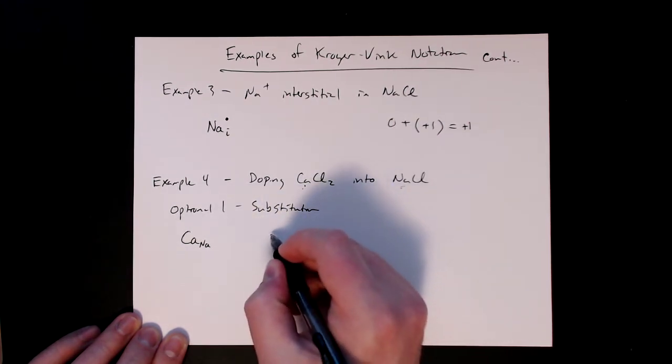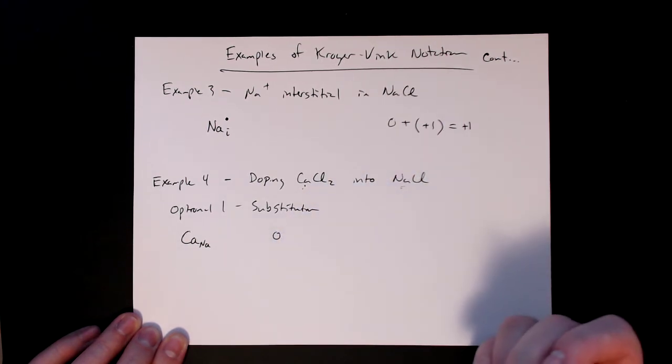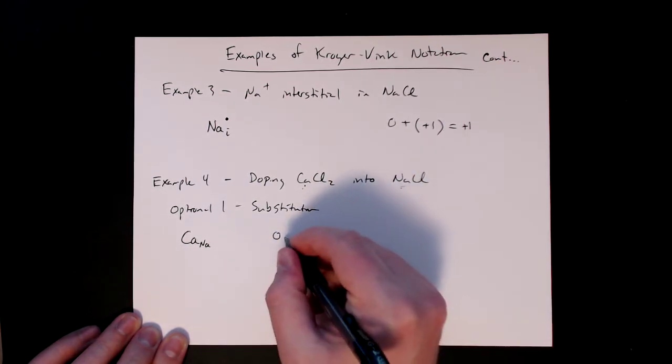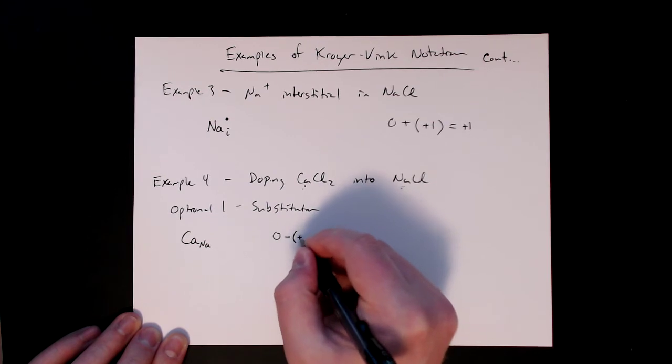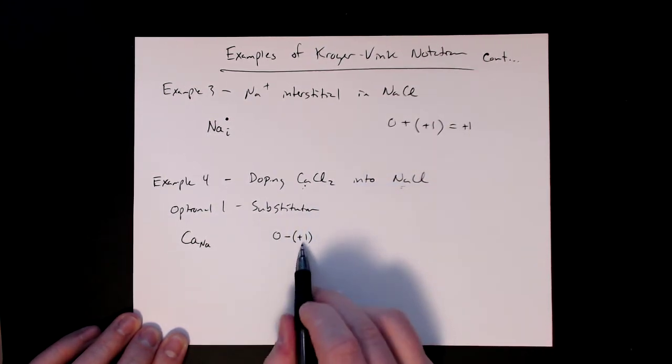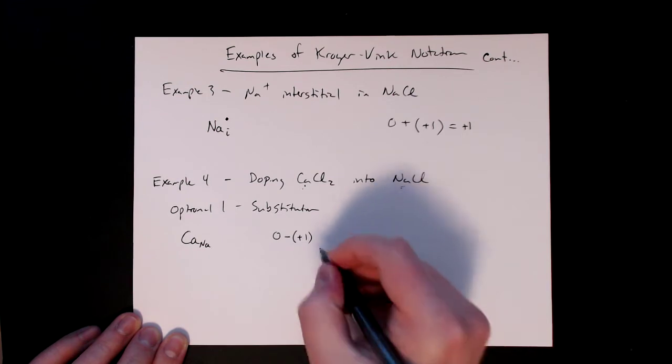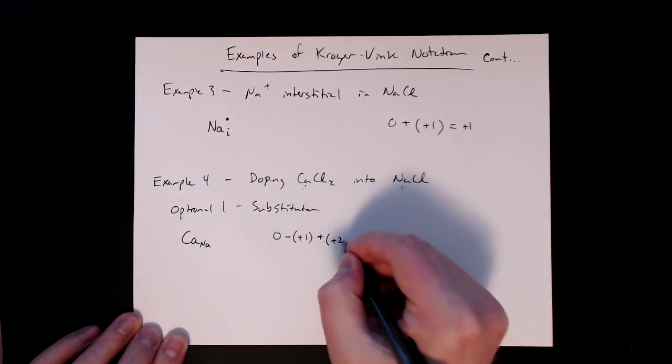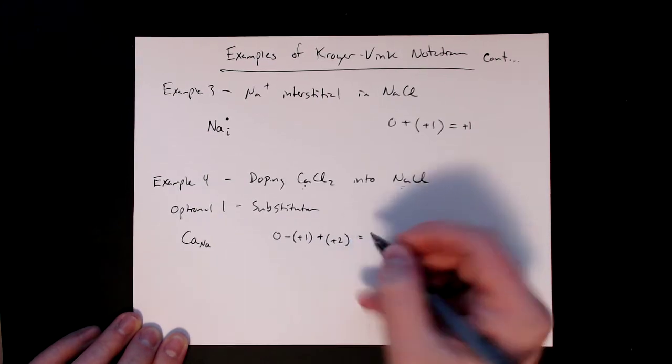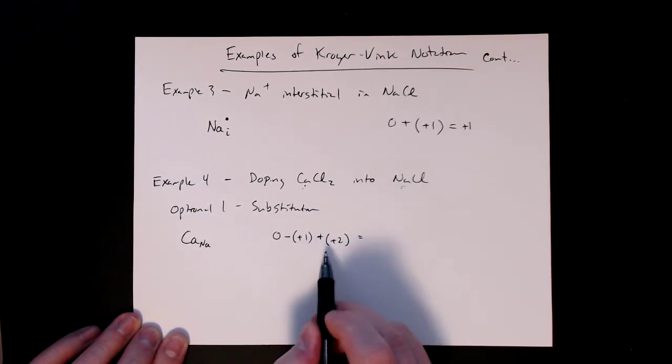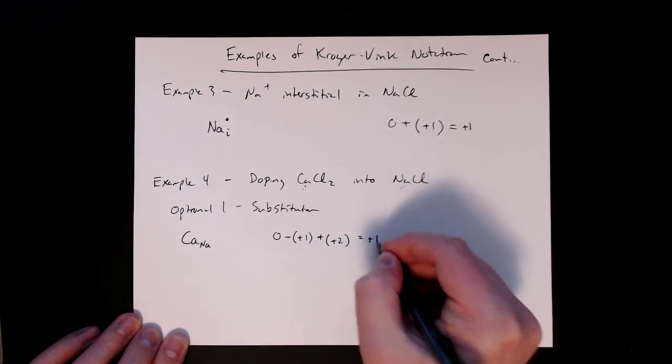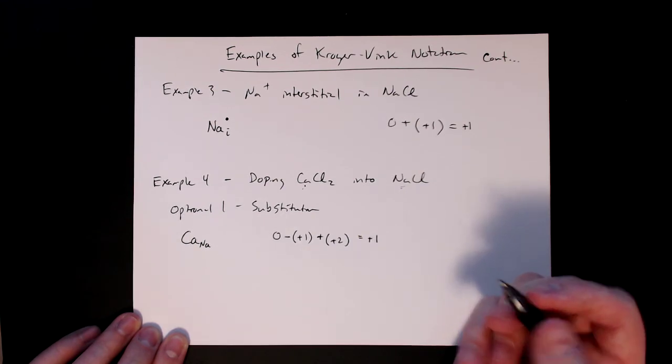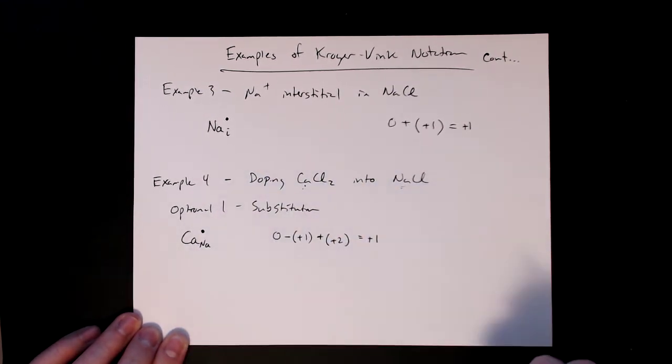So let's do the math here. So perfect crystal, and then we're going to have to remove the sodium. So remove the plus one charge, and then add the charge of calcium, which is plus two. So this would give us minus one plus two, so plus one. So it's again a point charge, so one dot.